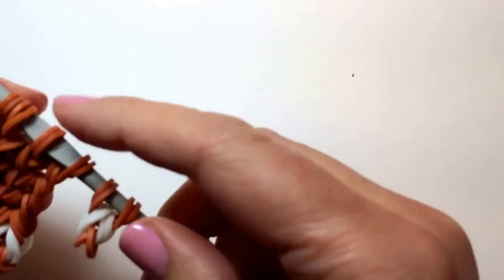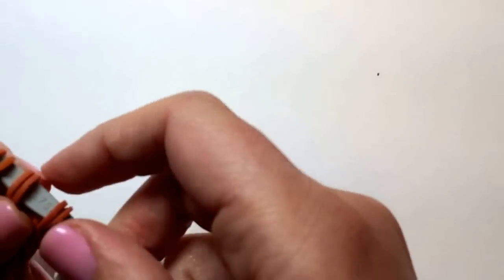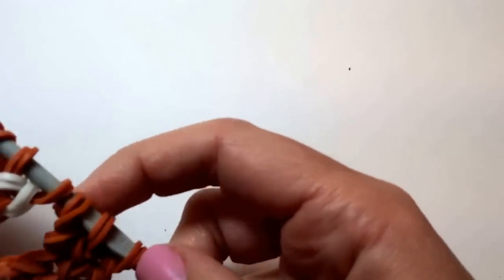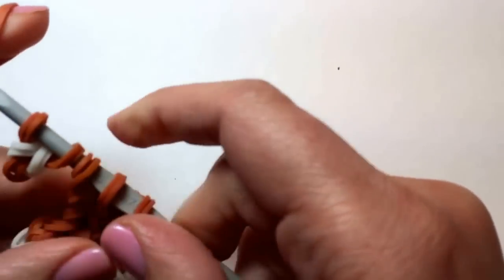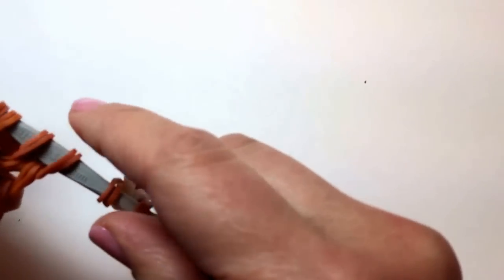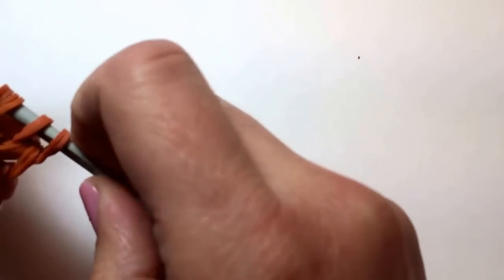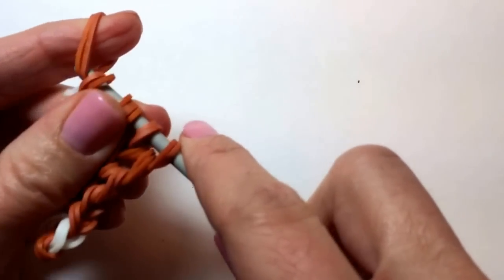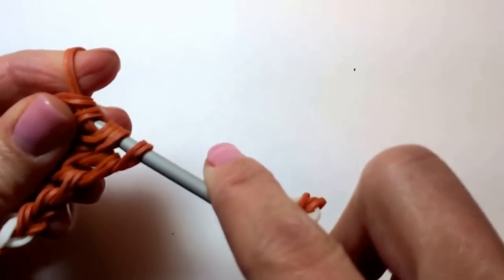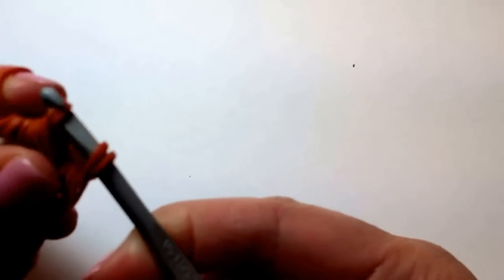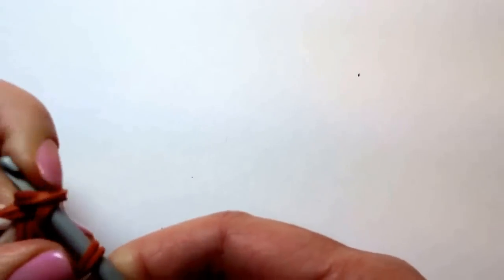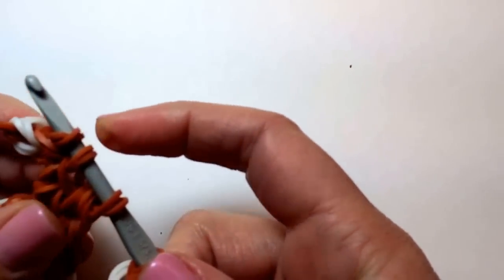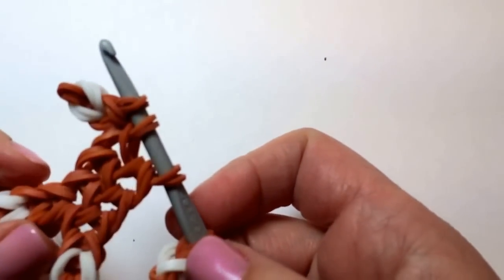So we're going to string through a rubber band to get this left shoulder. So that's going to go through the first four rubber bands that are on the hook. So one, two, three, and four. And that's one shoulder.